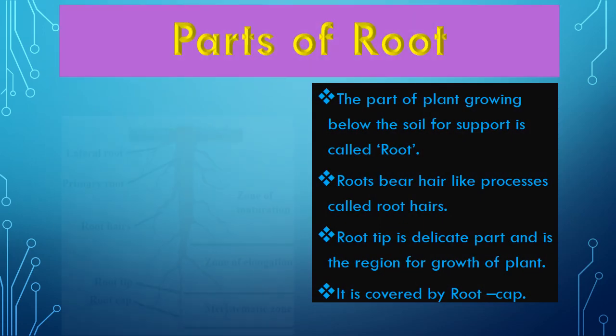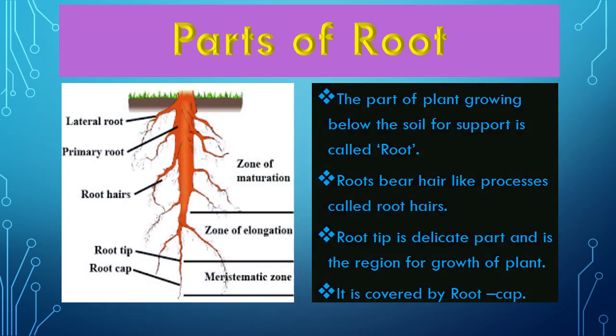Now the parts of the roots. You can see on your screen that there are different parts of the roots. The part of the plant growing below the soil for support is called root. Root bears hair-like processes called root hairs. The root tip is the delicate part and is the region for growth of the plant, and it is protected by the root cap.